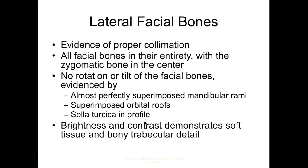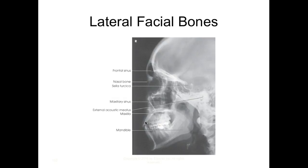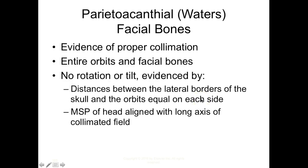Now reviewing evaluation criteria for all views. For the lateral: evidence of proper collimation (the textbook collimation is too loose — bring it in much tighter). All facial bones in their entirety with the zygomatic bone centered. No rotation or tilt, evidenced by almost perfectly superimposed mandibular rami, superimposed orbital roofs, and the sella turcica in profile. Brightness and contrast should demonstrate soft tissue and bony trabecular detail. Use the orbital plates, ramus, and body along with the EAMs to assess positioning.